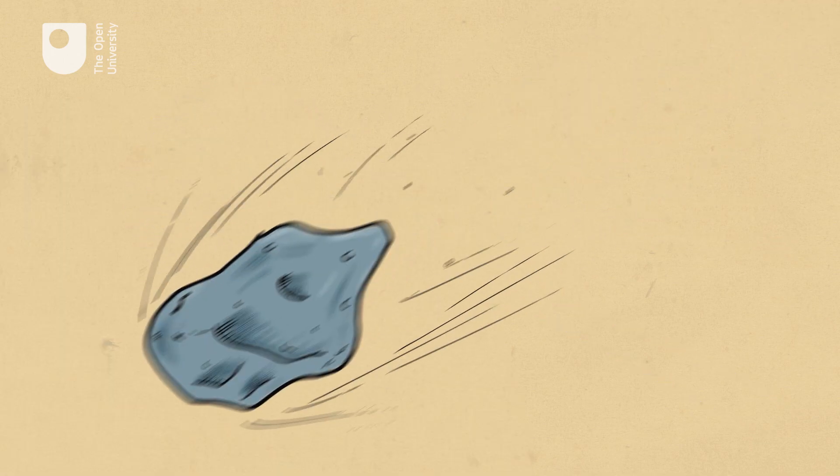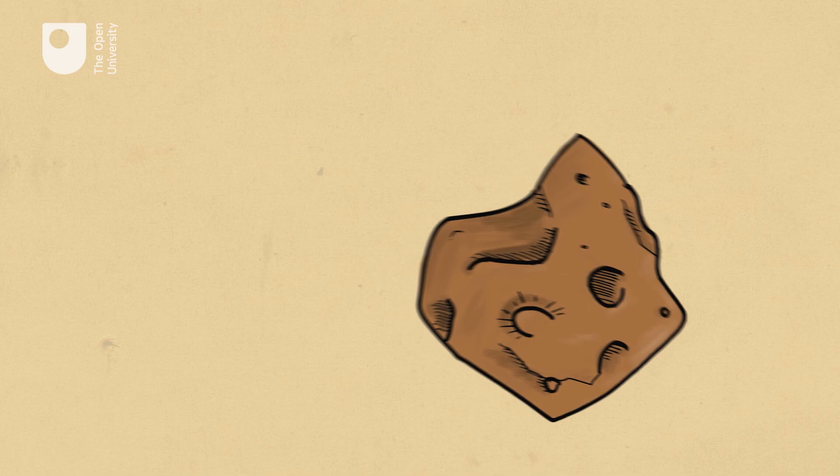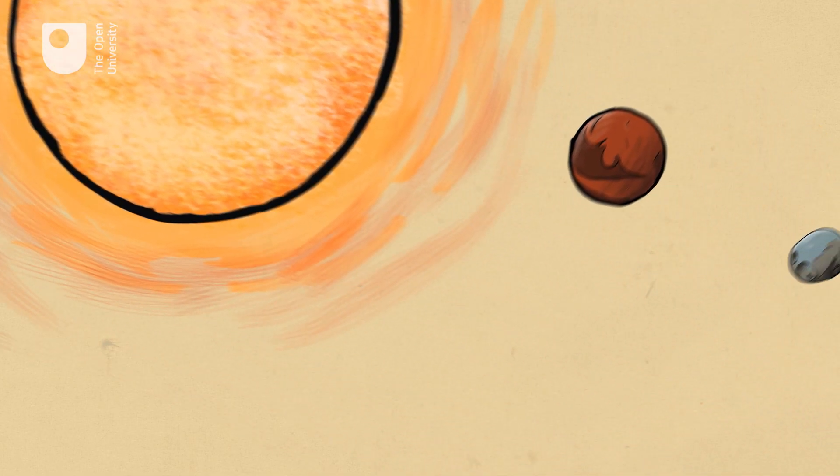Technically, the planets, comets, asteroids and so on are all satellites of the Sun, but we tend to reserve the term for objects going round things that go round the Sun.